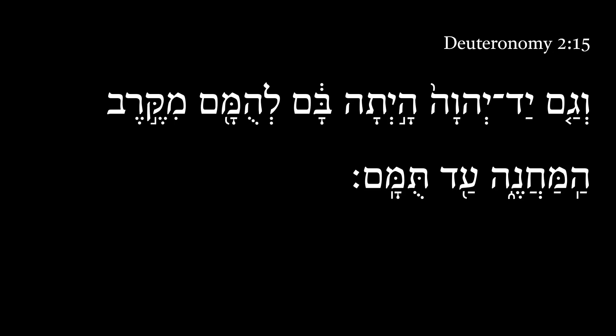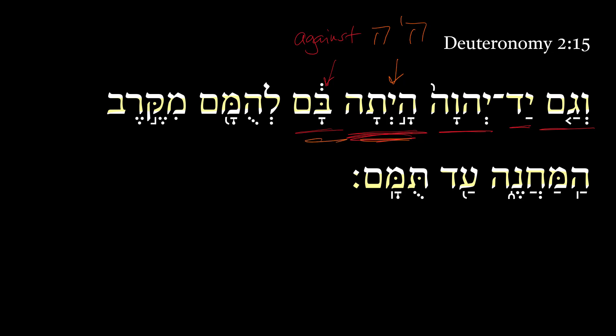Deuteronomy 2:15. So we get here on the translation: 'and moreover, the hand of the Lord existed against them.' Here we get an adversative bet, so we have that notion of against. The verb here is the Qal perfect 3FS of the root hayah. And so we get 'the hand of the Lord existed against them.' We could smooth that out into good English as 'the hand of the Lord was against them.'